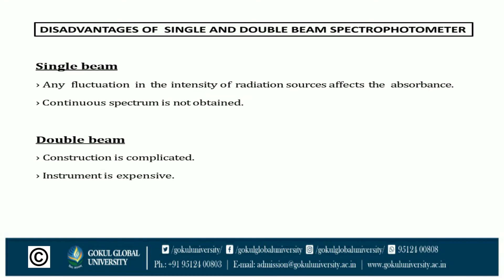Now the disadvantages of single and double beam spectrophotometers. The single beam disadvantage is that any fluctuation in the intensity of the radiation source affects the absorbance. A second disadvantage is that a continuous spectrum is not obtained.